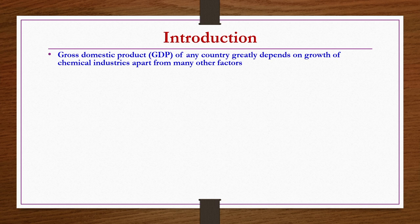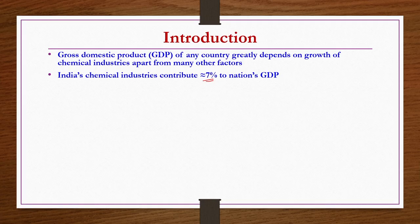What is this GDP? If you take our country India, India's chemical industries contribute 7 percent to the nation's GDP, which is a very high amount. A 7 percent contribution to the nation's GDP means the Indian chemical industry is very important from the growth and prosperity of a nation's point of view.